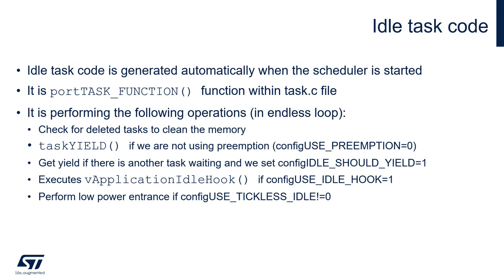The Idle Task is a task which is generated and created automatically by the scheduler after it is started. This task is executed always when the ready task list is empty. Its code is stored within the task.c file within the macro portTASK_FUNCTION. The idle task performs the following list of operations in an endless loop.